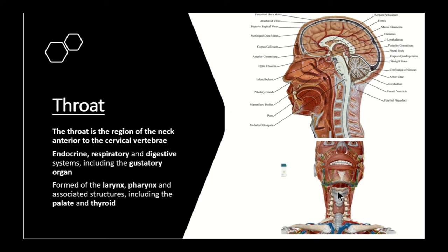Starting from the top, we can see the hyoid bone just underneath the mandible. The hyoid is a U-shaped bone — we can see the front of the body of the hyoid here. In a mid-sagittal section, we see the cut section of the body; the cornu project backwards and sideways so they aren't visible in this view. The mandible is the floor of the oral cavity, with the hyoid bone below it.